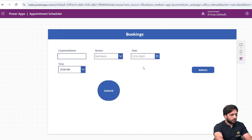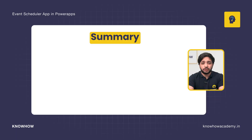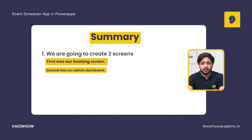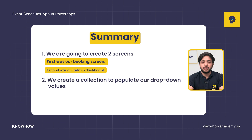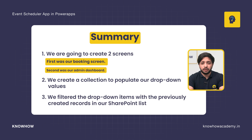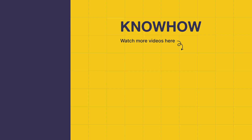This is how you can create an easy-to-use appointment scheduler in Power Apps, with room for further advancements. In this video, we created two screens — a booking screen and an admin dashboard — built a collection to populate the dropdown values, and filtered those dropdown items using previously created records in our SharePoint list. Thank you for choosing KnowHow Academy as your IT source. Stay curious and keep learning.